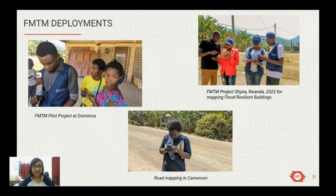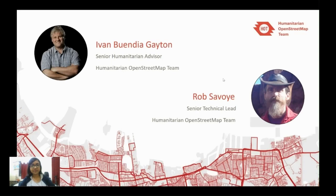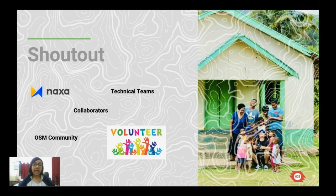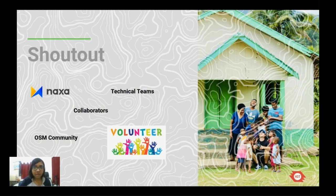Currently, FMTM has been deployed at three places: Dominica, Cameroon, and Rwanda. The credit for leading the FMTM team goes to Ivan Gayton, the Senior Humanitarian Advisor at HOT, and Rob Savoy, the Senior Technical Lead at HOT. A big shout out to our partner NACSA, the OSM community, collaborators, technical teams, and all our volunteers.